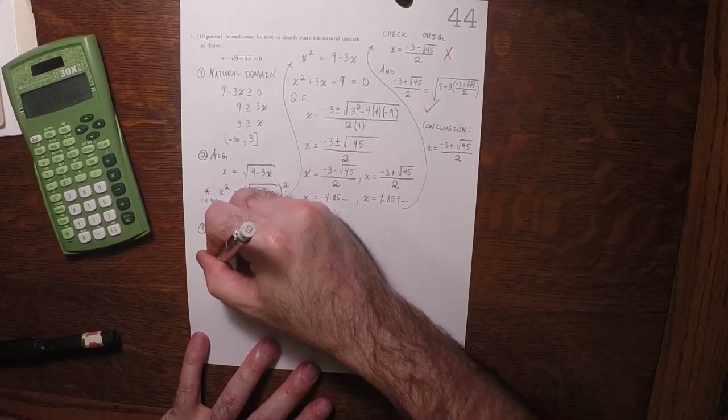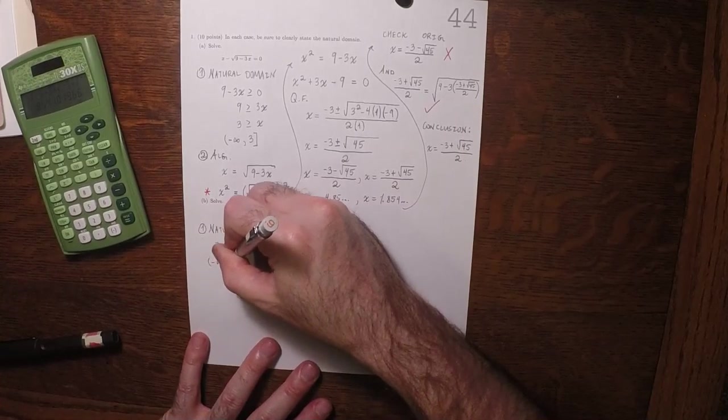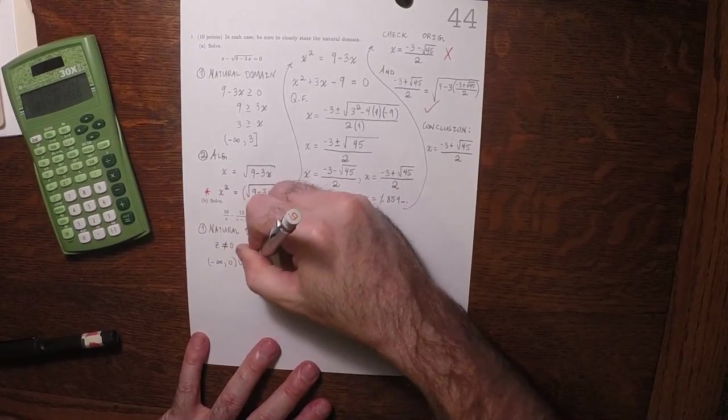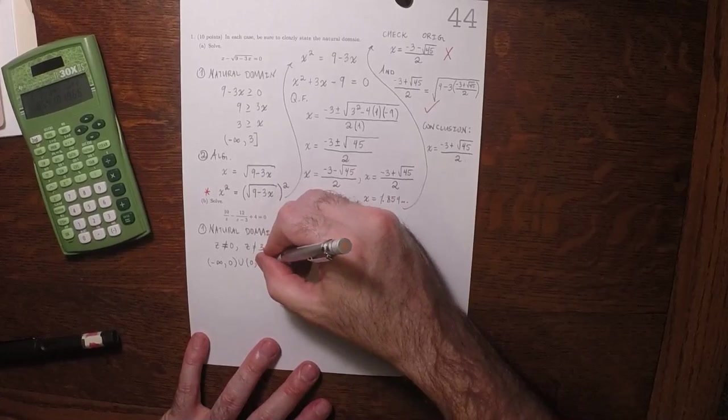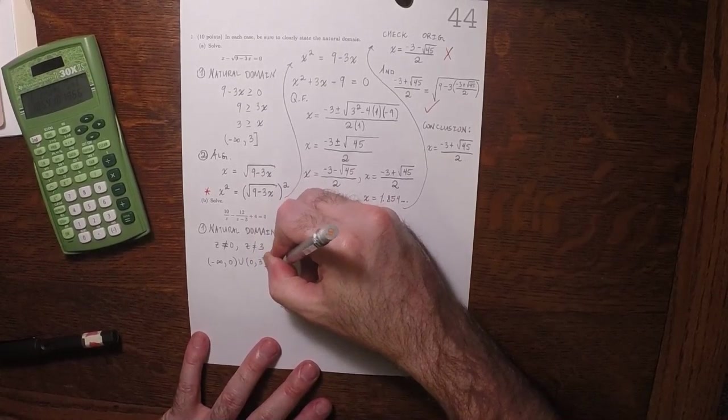the natural domain is anything except z is 0 and z is 3. You could write that in interval notation as negative infinity to 0, union 0 to 3, union 3 to infinity.